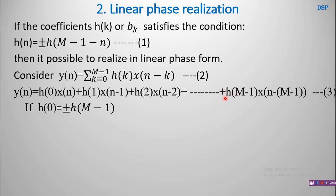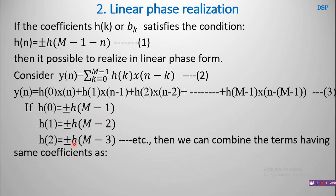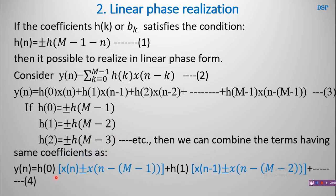This may be either plus or minus depending on the case. If h(0) equals h(m-1) then the rule holds for n=0, and similarly for all other values: h(1) = ±h(m-2), h(2) = h(m-3), and so on. We can then club terms having like coefficients and reorganize the equation: take h(0) as a common factor and write within brackets x(n) and x(n-(m-1)), then h(1) pairs with x(n-1) and x(n-(m-2)), continuing like this.